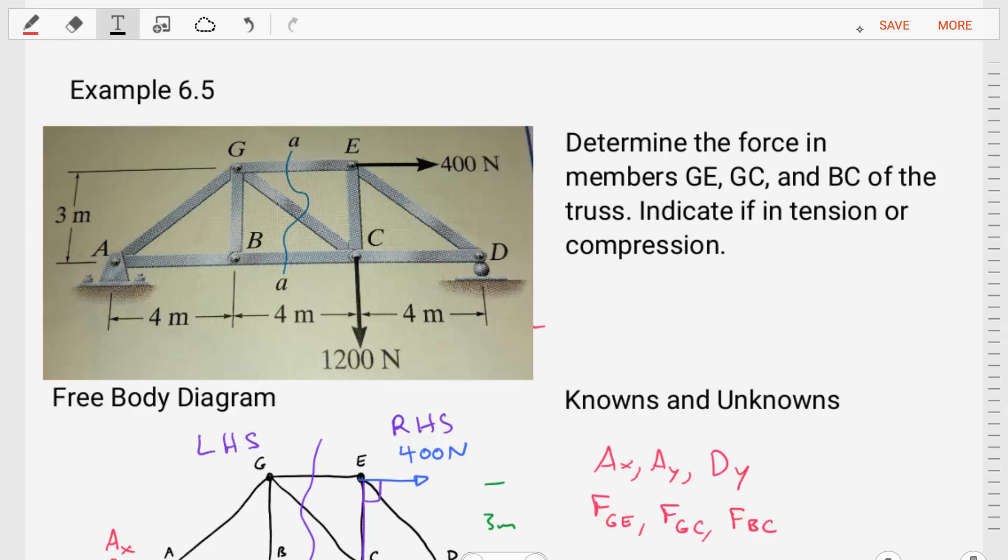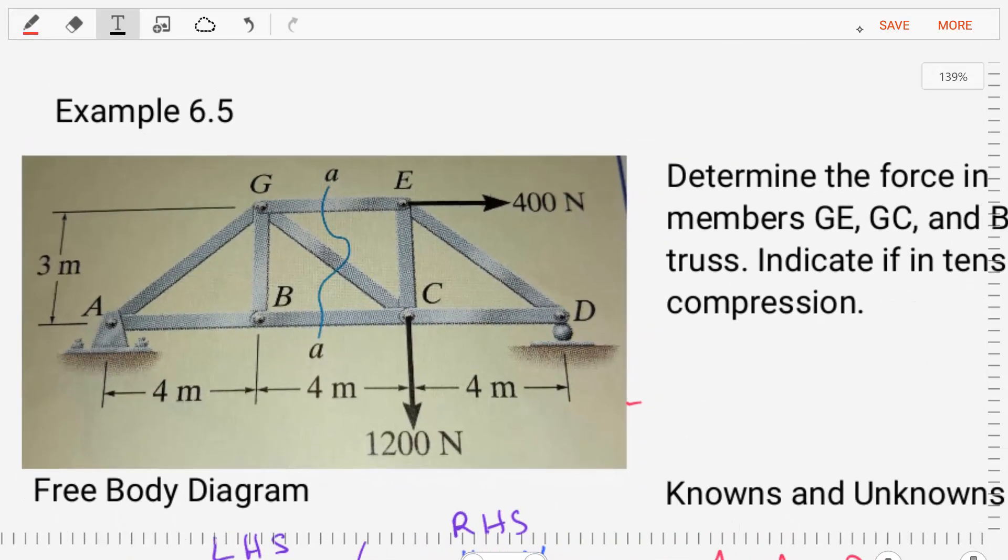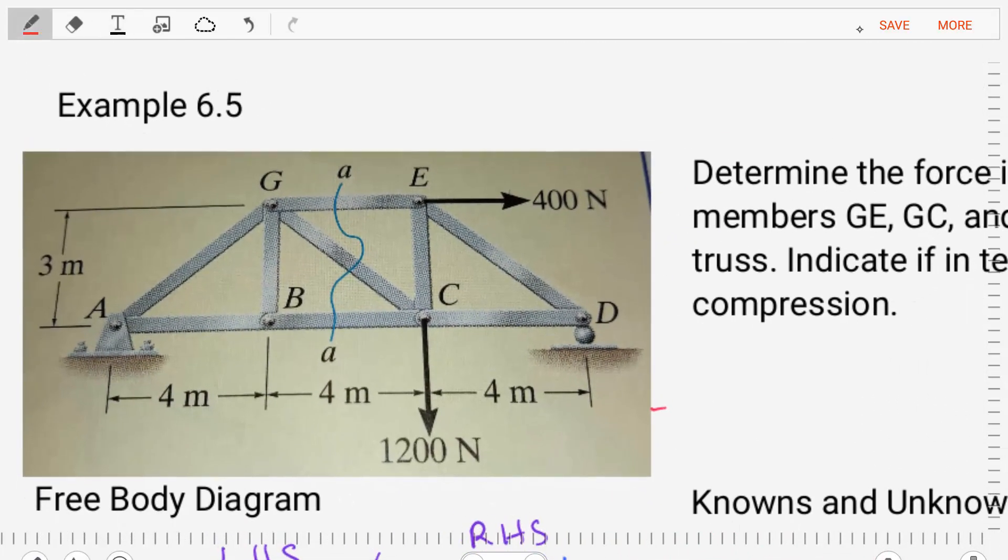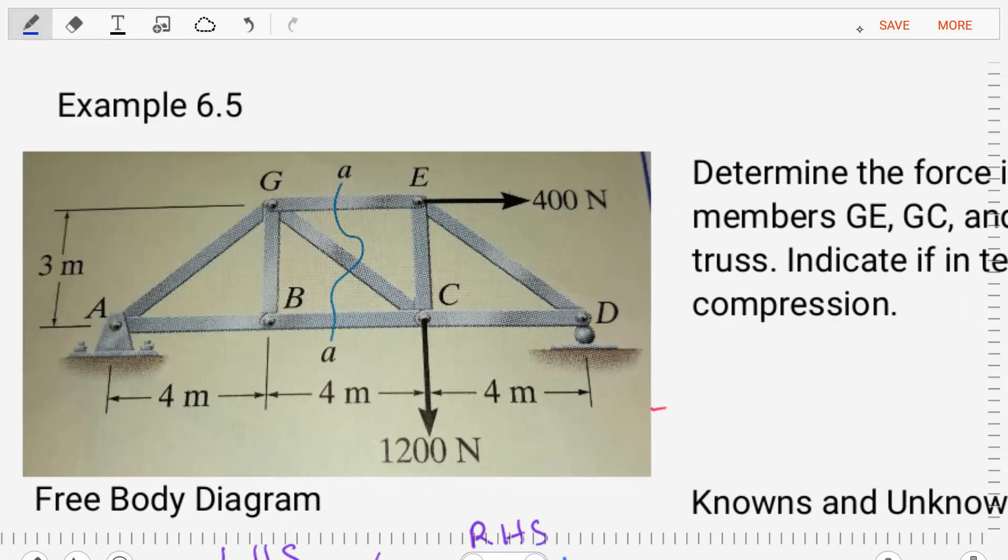Let's start this problem by zooming in on the truss that we're given and evaluating what are the things that are known and what are the things that are unknown. Just right off the bat, we can see that we have dimensions for this truss, a lot of dimensional information, and from that we can figure out some angles within the structure if we need them.